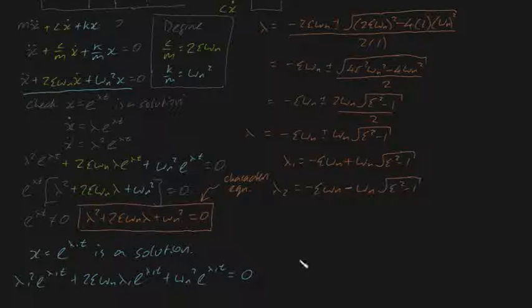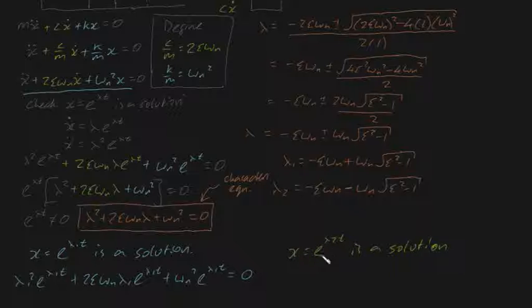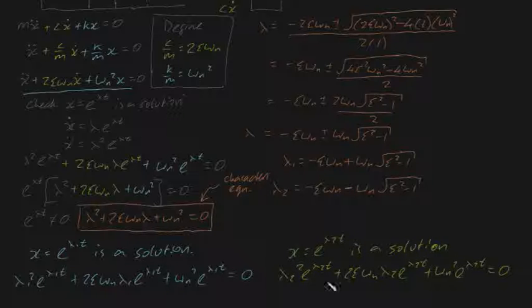We can say the exact same for the other solution. We know that x equals e to the lambda 2 t is a solution, and this means if we substitute x equals e to the lambda 2 t into the equation, then it will be equal to zero. I've written them both out.